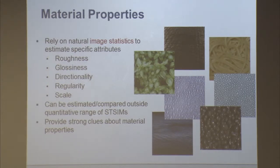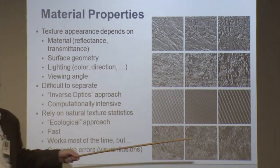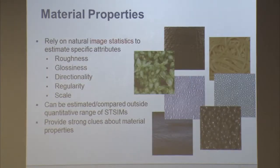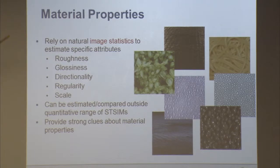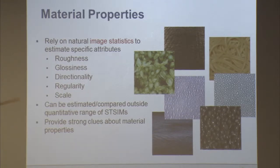Moving beyond similarity to visible differences: can we separate different materials? One approach is to look at specific texture attributes like roughness, glossiness, and directionality. These can be estimated beyond the range of identical or very similar textures and can provide strong clues about material properties. We want to understand these properties, and glossiness in particular is one we have studied.